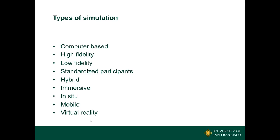In situ simulation takes the simulator — most likely a high-fidelity or mid-level fidelity simulator — into a patient care area, into the lobby of a hospital, into a parking lot, and does a code or another scenario in that environment. Mobile simulation entails having a van or bus with simulators and people, moving to different areas around the region to provide simulation experiences for those who may not be able to attend in an urban area. And then virtual reality — we're seeing a lot with holograms and avatars. So all of these things are types of simulation.